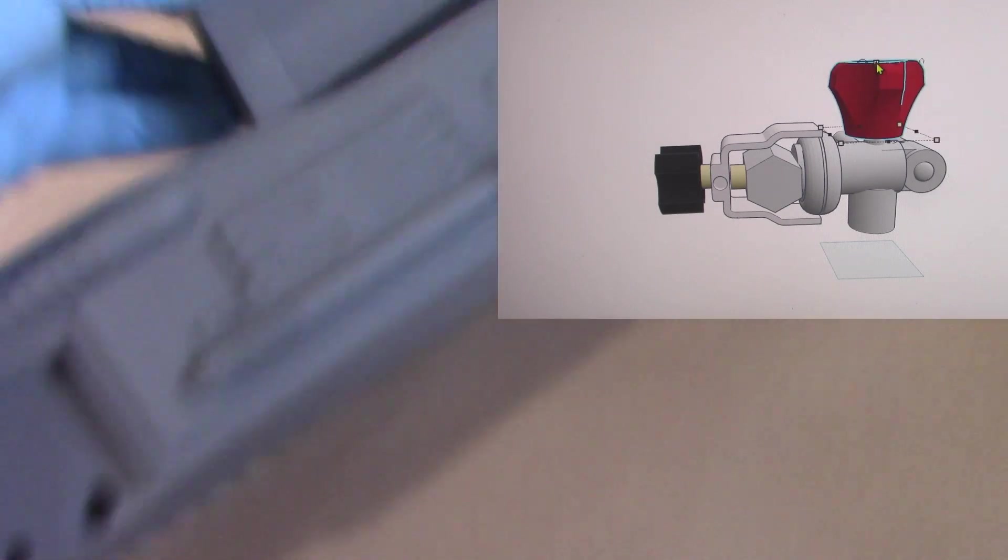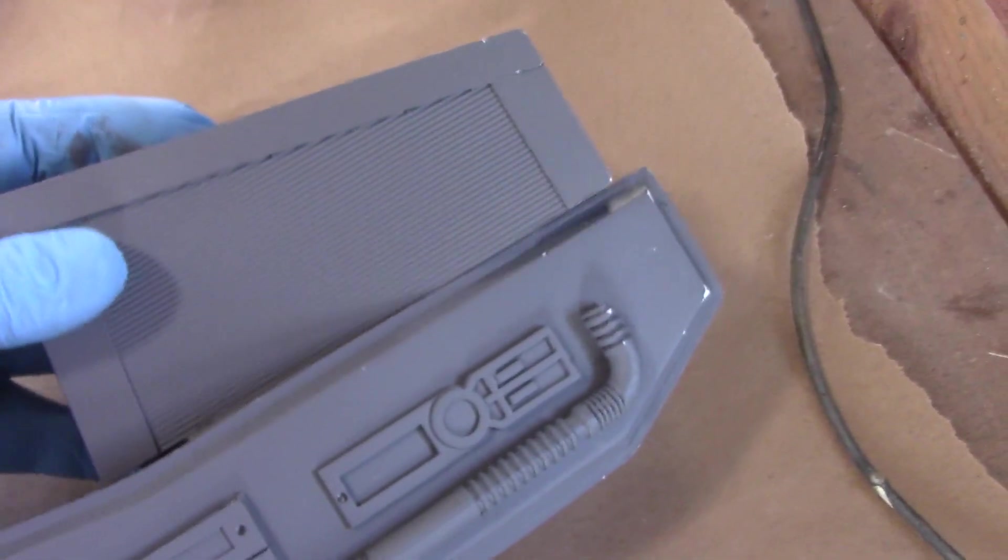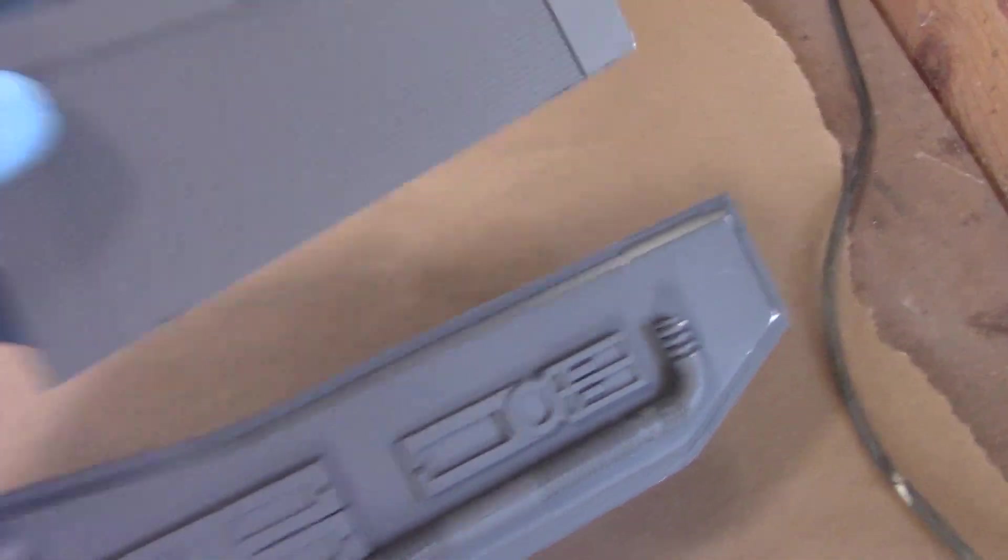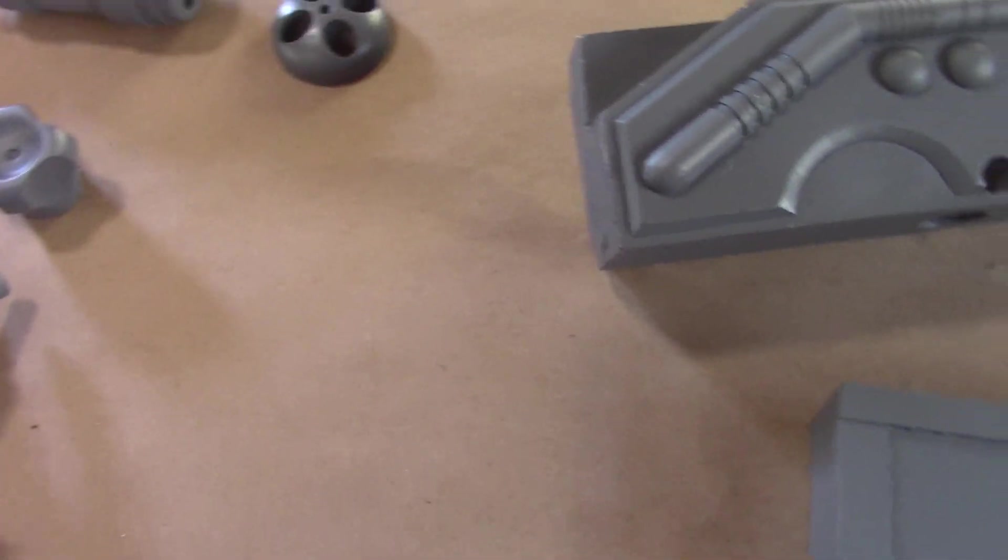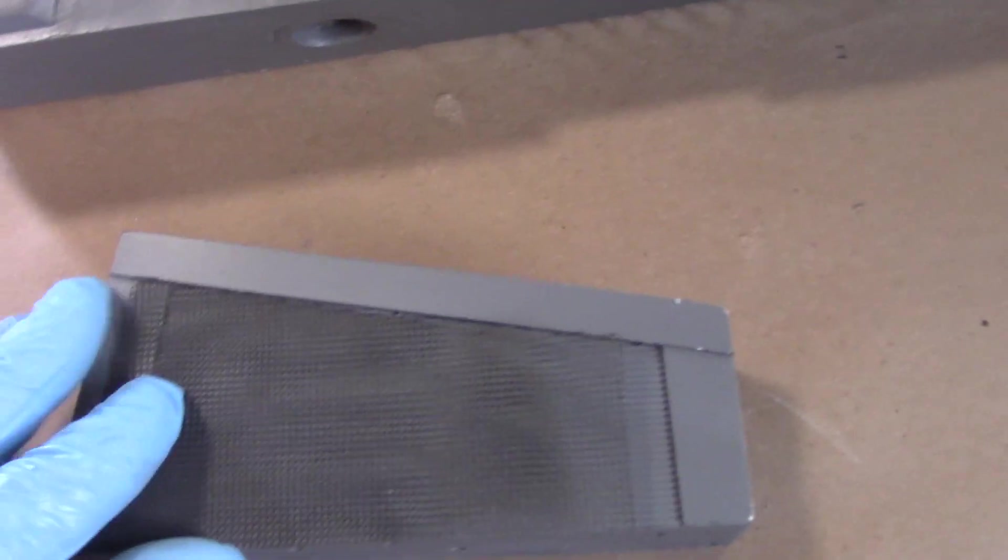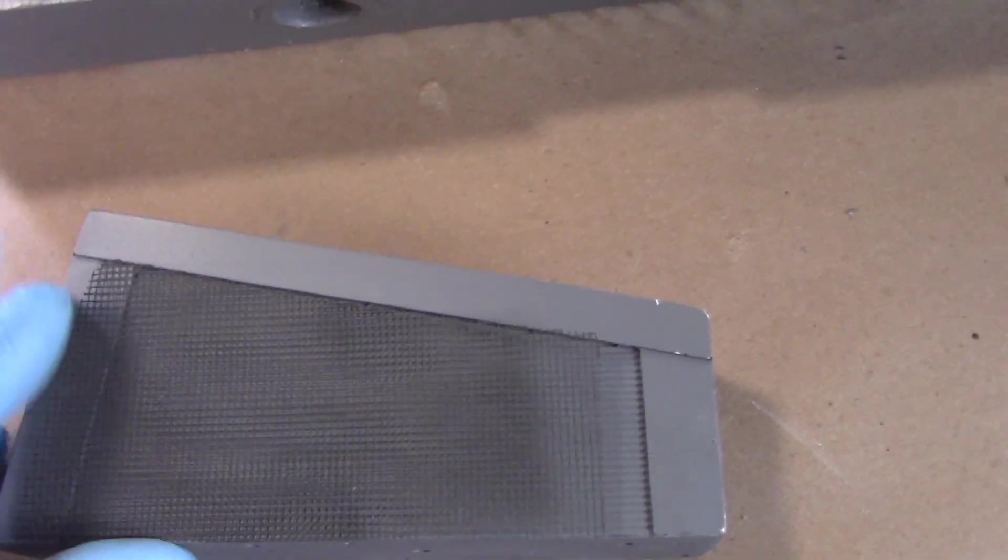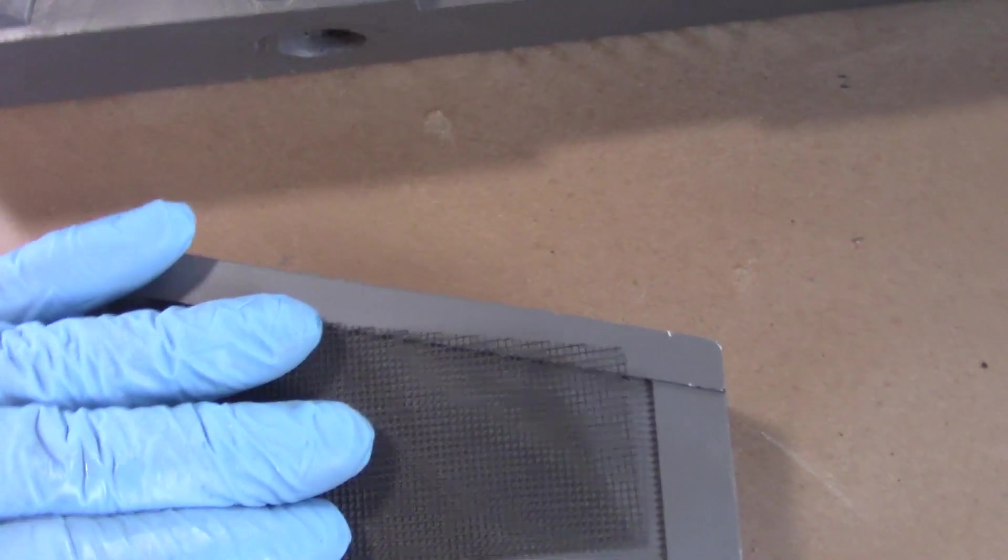The vent exhaust, whatever this is, that sits on top of there, now includes, instead of just a big piece of screen that you cut yourself, I cut it for you on the laser cutter. So you've got screen that lays inside of there on both sides.